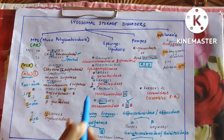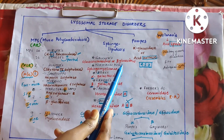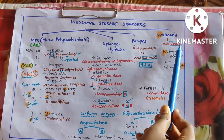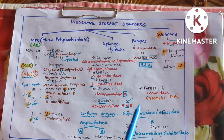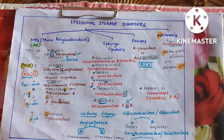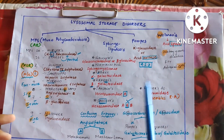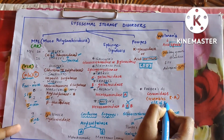Tay-Sachs has only hexosaminidase A; Sandhoff's has A and B. Alpha is for Fabry's and beta is for Krabbe's, because Krabbe's has two B's in it. Farber's disease is ceramidase deficiency. Farber's is classified under lysosomal storage disorder and it resembles rheumatoid arthritis features — the nodules and pain resemble rheumatoid arthritis.